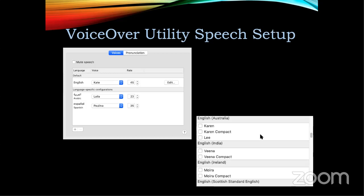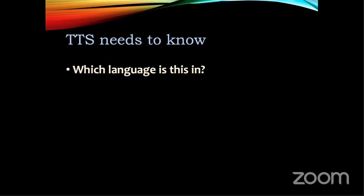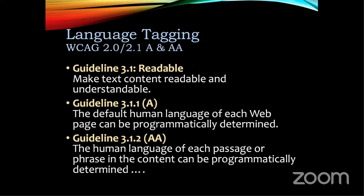English also has regional varieties available from Apple, such as Australian, Irish, and Indian English. But text-to-speech more than any other type of document needs to know what language it is, so it can use the right engine. That leads to one of the great WCAG 2.0 and 2.1 guidelines: 3.1 — Make Text Readable and Understandable. Specifically, 3.1.1 requires that the default human language of each web page is programmatically determined, meaning the document must be tagged to indicate which language it is in. And 3.1.2 says that if you are switching languages within a document, you need to indicate when you're switching and when you're switching back.